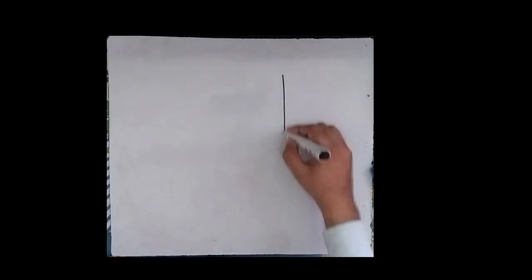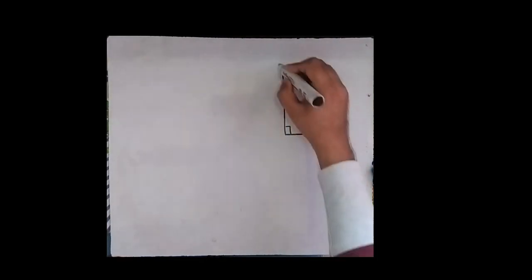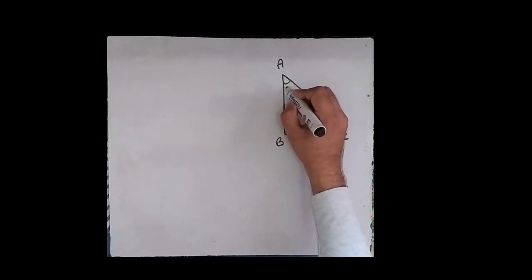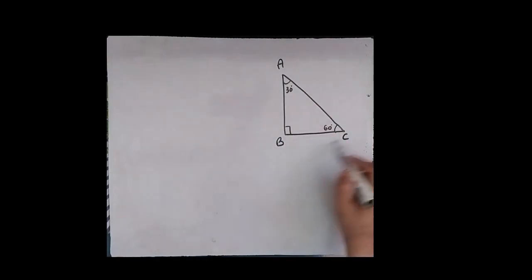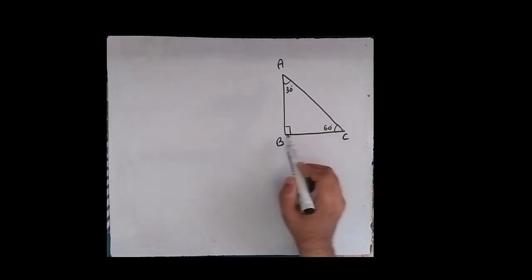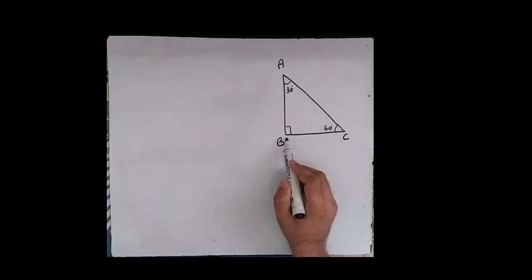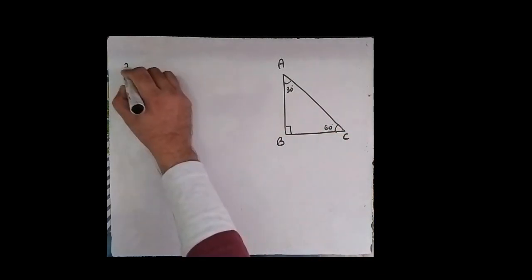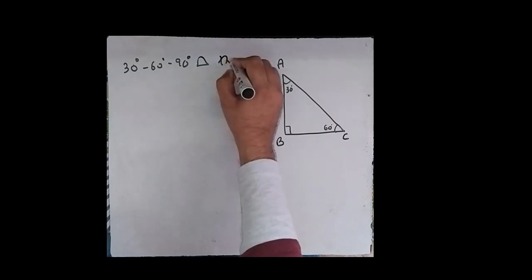What is the 30-60-90 theorem? We need one right angle triangle. Triangle ABC is a right angle triangle where angle A is 30 degrees and angle C is 60 degrees. This triangle is called a 30-60-90 triangle because it has one angle of 30, one angle of 60, and one angle of 90.